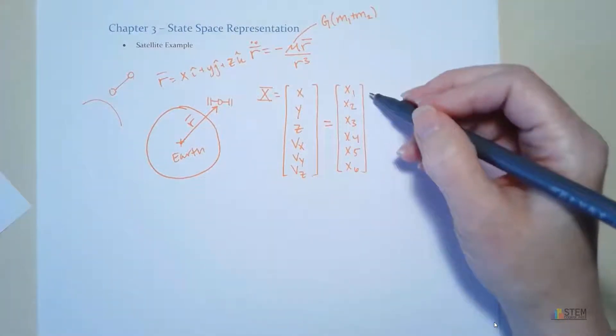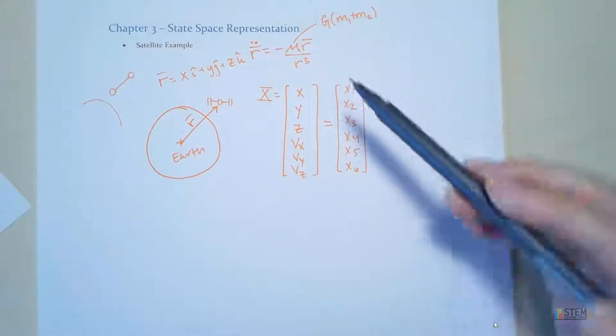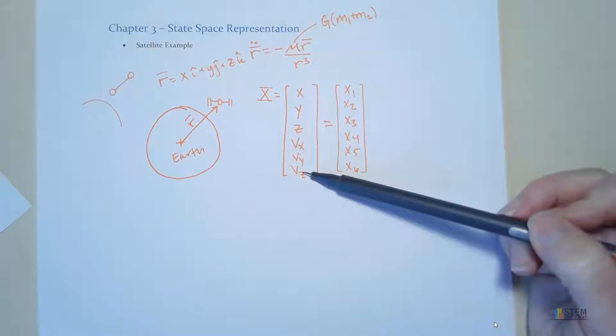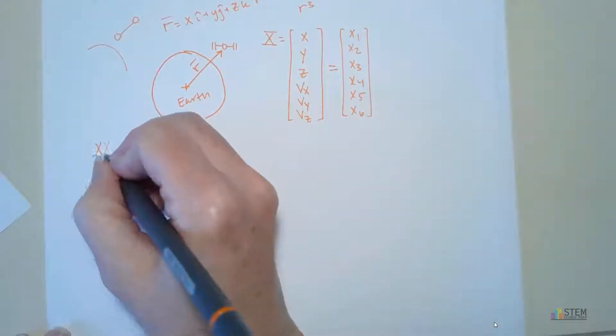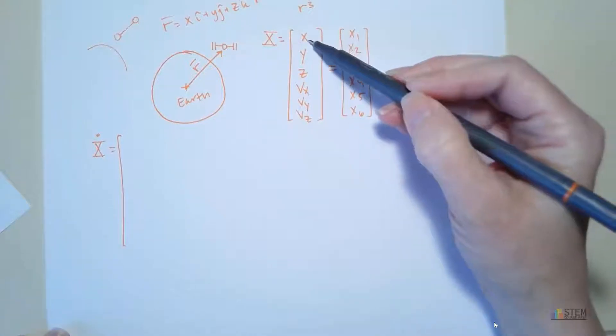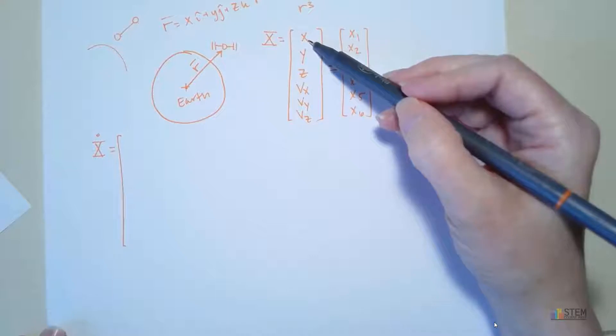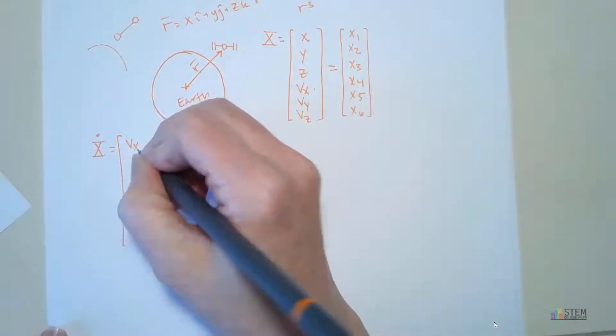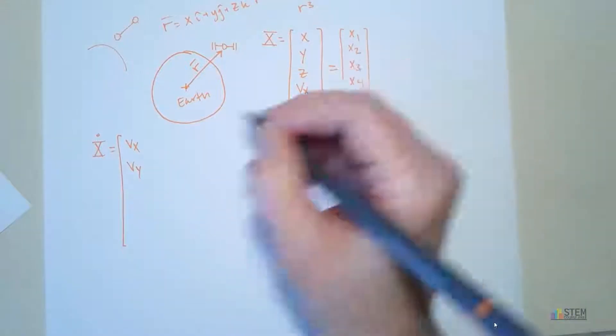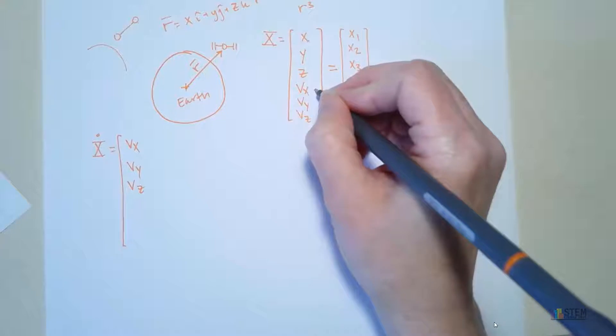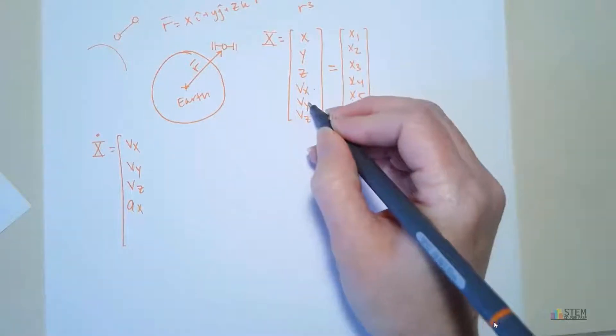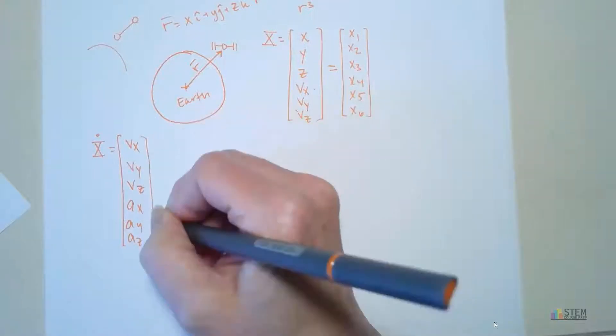Now next thing that I needed to do, because I'm trying to get a first order differential equation, I'm going to take this vector here, or this matrix, and I'm going to take the derivative of that. So let's do that down here. So I'm going to do capital X dot, derivative of the state vector. Now if we do that, let's see what we get. We're going to get X dot. Well, what is X dot? X dot is really VX, right? Velocity in the X direction. Then next, I get Y dot. Well, that's VY. Z dot is VZ. Now when I get to VX, take the derivative, I'm going to get the acceleration in the X direction, right? I'm going to get AX. Then I get AY, and then finally AZ. So now I've got that.